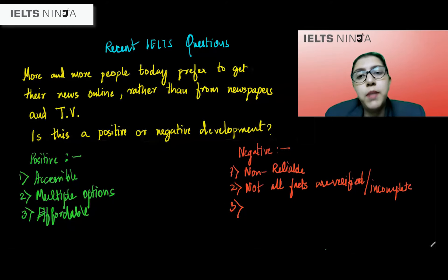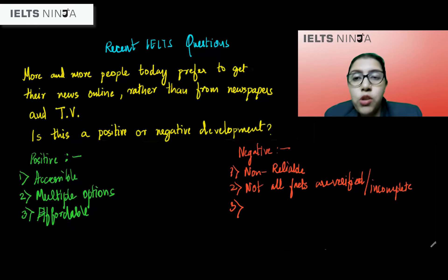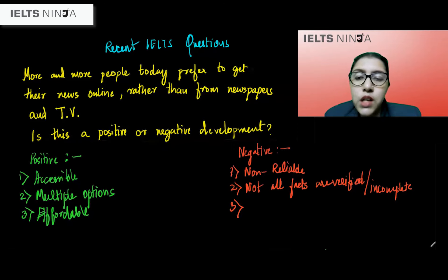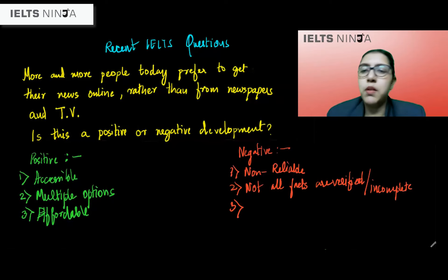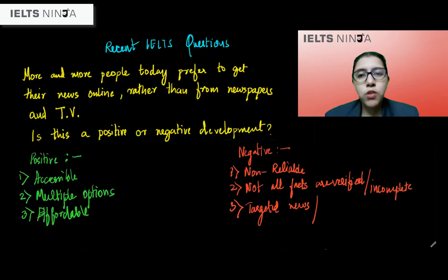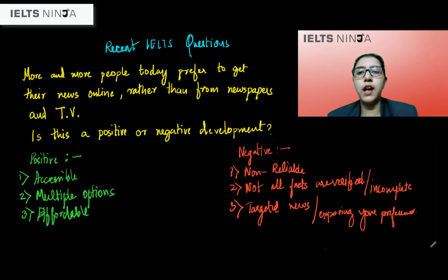One further point about why over-reliance on online news could be a negative factor is that a lot of industries that rely on television and newspapers — such as advertisers — are now moving online. This results in much more prominent targeted news reporting online, and in the process you are also exposing your preferences to advertisers who are tracking what a particular person is interested in.